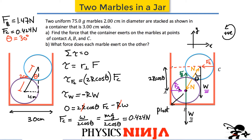The contact force FA is actually very easy. Looking at all the forces on the system in the horizontal direction, FA has to equal FC. Whether you consider the whole system or the forces on each individual marble, you'll find FA must equal FC in magnitude - they're in opposite directions. So FA equals 0.424 newtons.